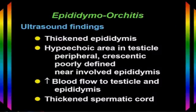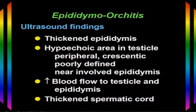Some infections start in the epididymis and affect the testicle as well, becoming epididymoorchitis. In these cases you have all the findings of epididymitis, plus abnormalities inside the testicle: hypoechogenicity in the testicle typically at the periphery in the region of the involved epididymis, increased blood flow to both the testicle and the epididymis, and a thickened spermatic cord.